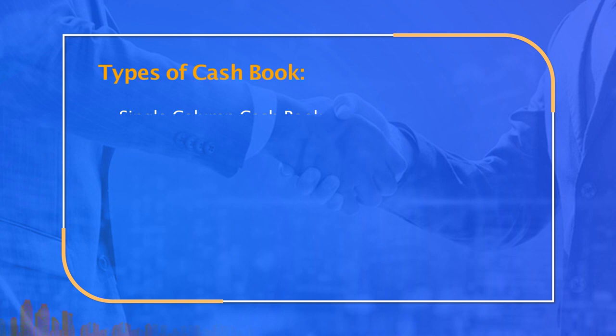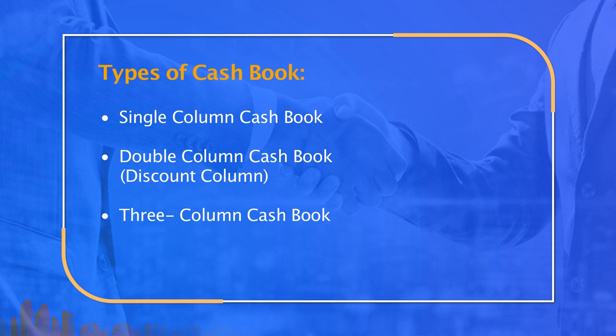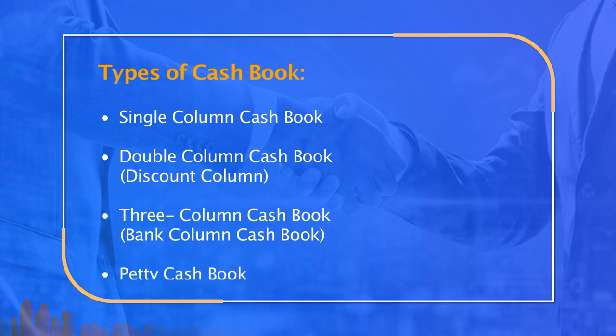For cash payments, all cash payments are evidenced by the original copy of cash memo or cash receipt issued by the recipient business, attached with a cash voucher as evidence that cash was paid to the recipient. Types of cash books are: number one — single column cash book; number two — double column cash book; number three — three column cash book, also called bank column cash book, which is the most popular; and number four — petty cash book.